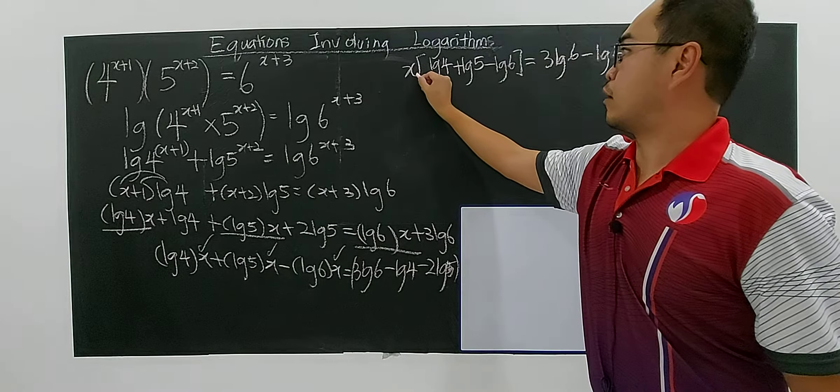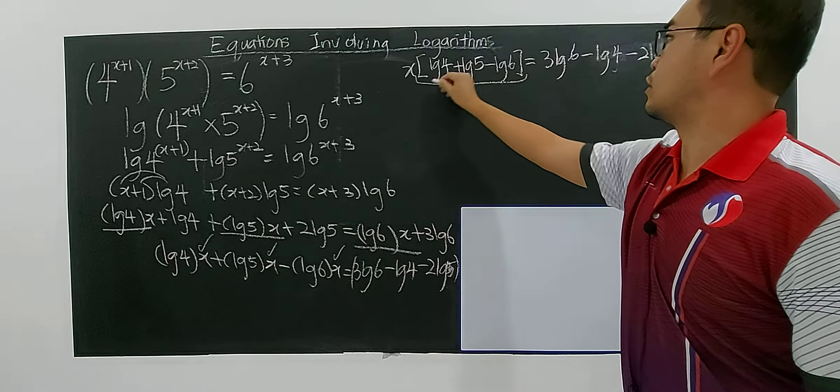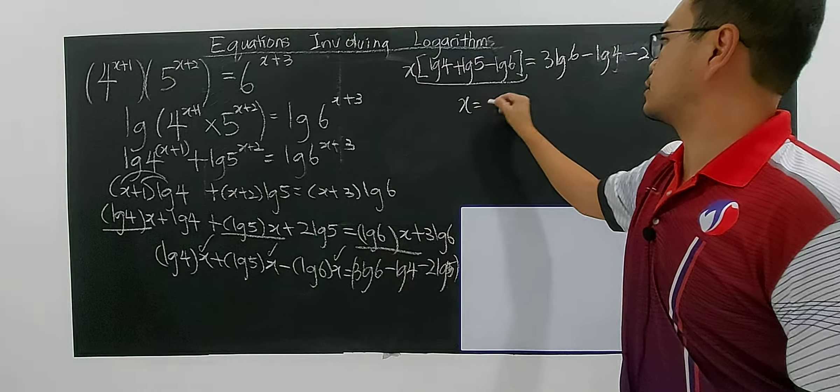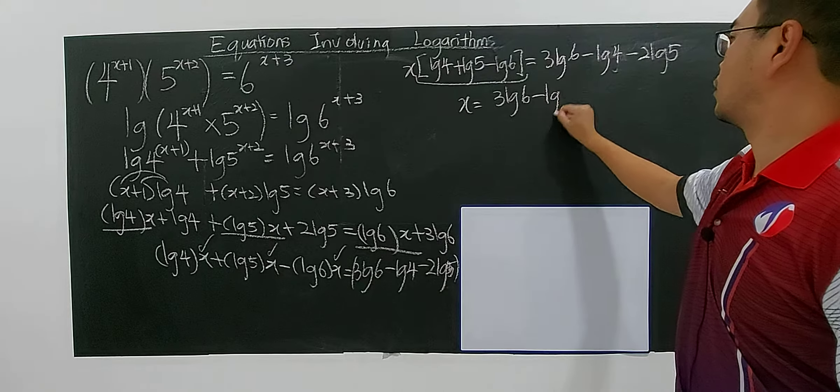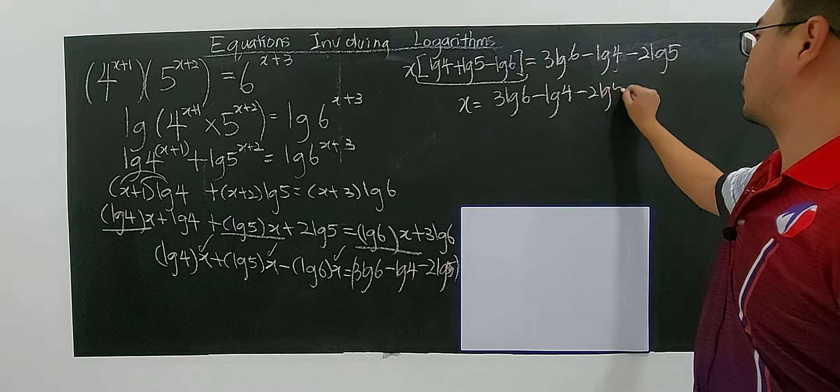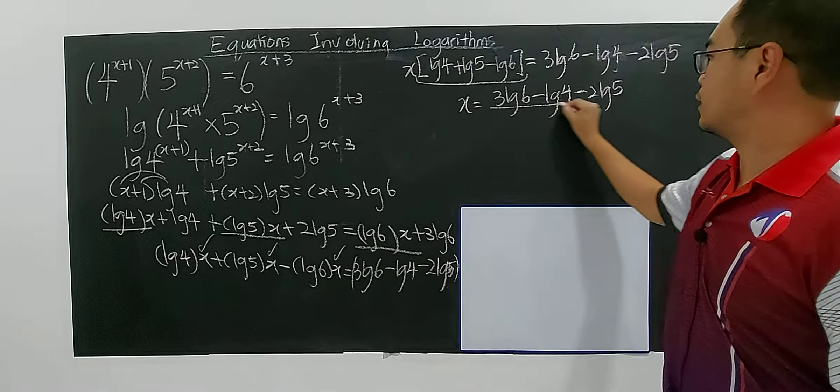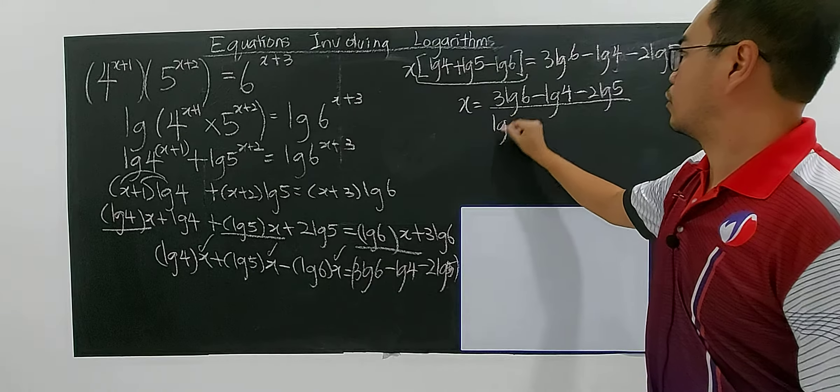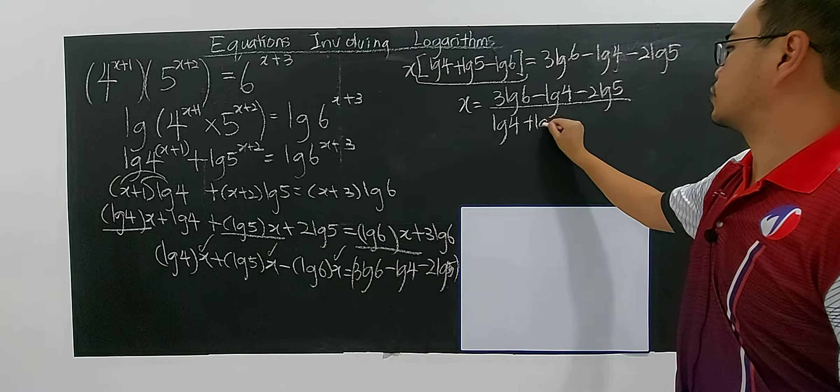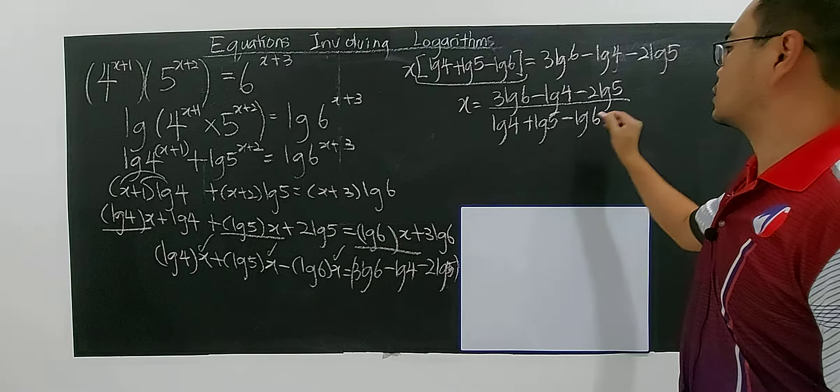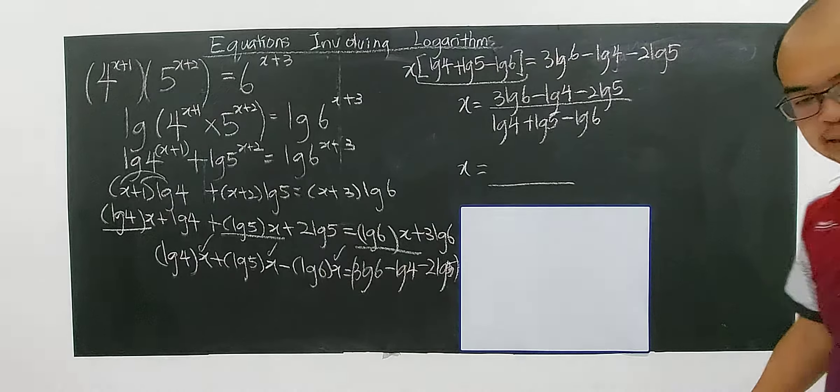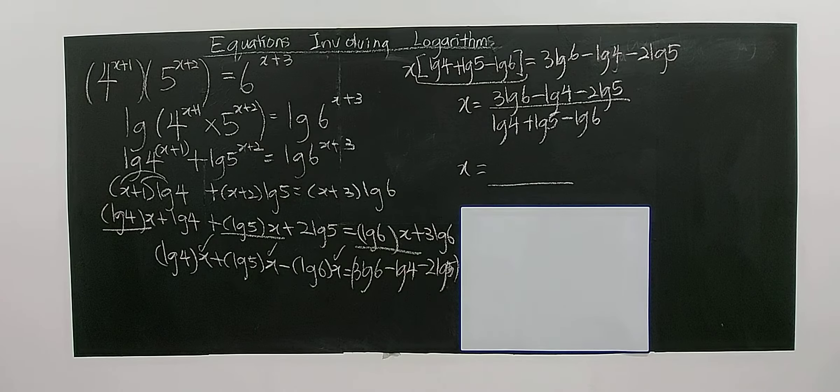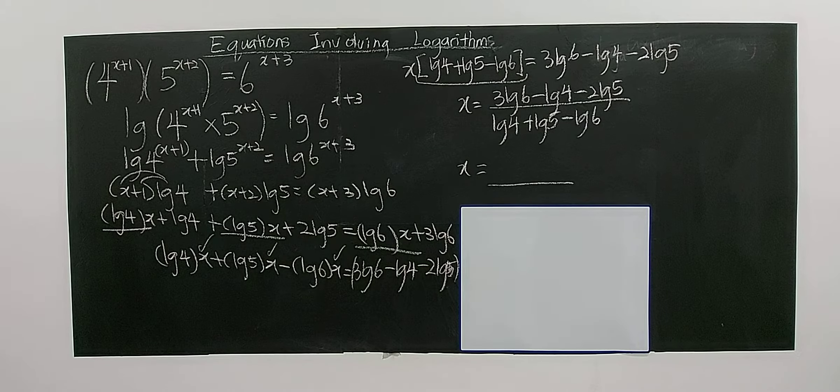x = (3log6 - log4 - 2log5) / (log4 + log5 - log6). Now it's time to use your calculator. You have to convert this to decimal form using your calculator. This is how you key in using the fraction.